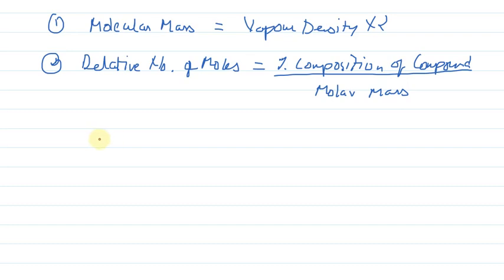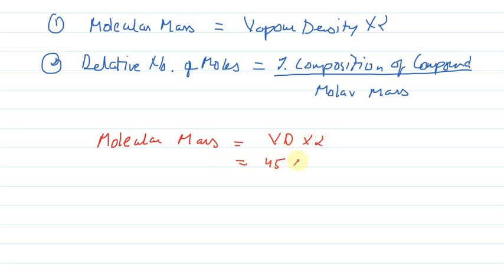So first, from the given vapor density we calculate the molecular mass. Molecular mass is equal to vapor density into 2. Vapor density is 45, so 45 into 2 gives us a total of 90.